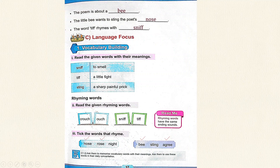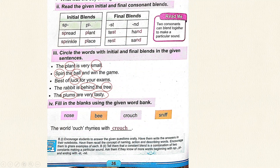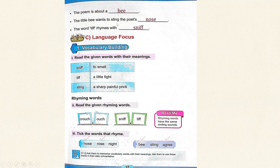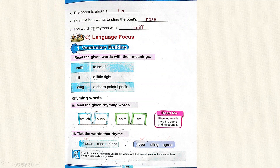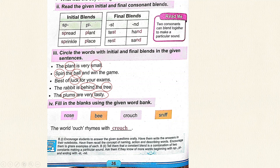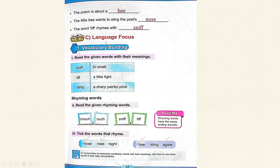The poem is about a — nose? No. Bee? Yes. The poem is about a bee. The little bee wants to sting the poet's nose. The word ouch rhymes with — nose? No. Bee? No. Crouch? No. Sniff? Yes. The word ouch rhymes with sniff.